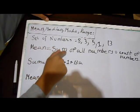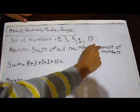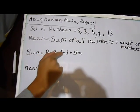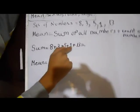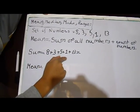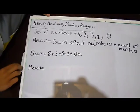So, mean equals sum of all numbers divided by count of numbers. So, sum would be 8 plus 3 plus 5 plus 1 plus 13. So, let's start with this. 8 plus 3 is 11, plus 5 is 16, plus 1 is 17, plus 13 would equal 30.